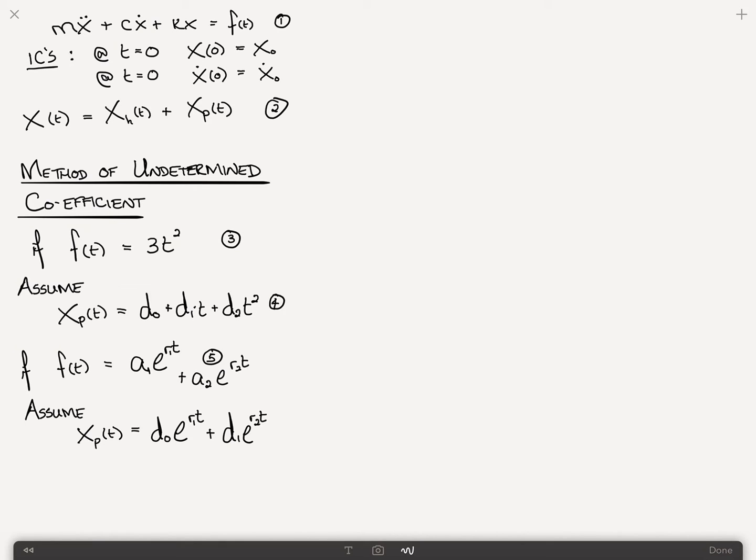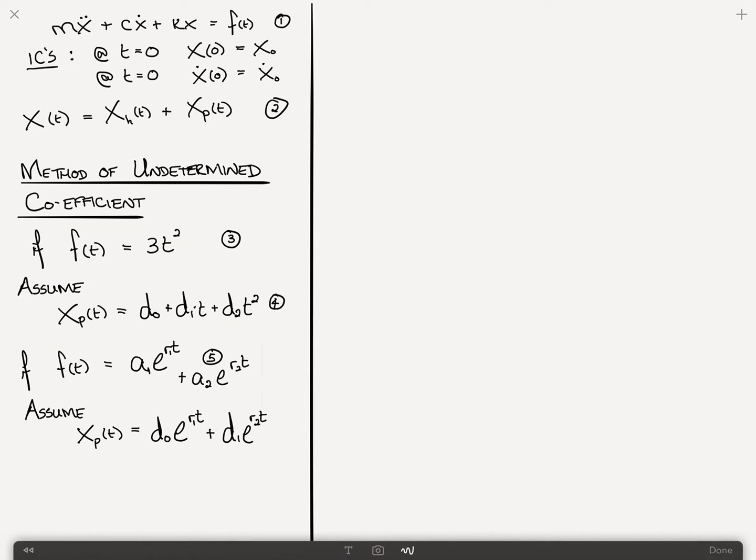So what we're trying to do in the case of an exponential is, on the left-hand side, we want to match for each type of exponential. You substitute it into equation one, x and its derivatives, and then you equate everything that's multiplying e to the r1t and everything that's multiplying e to the r2t. In this case, you would have two equations and two unknowns.